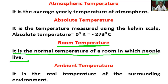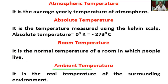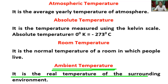Room temperature is a range of air temperature that most people prefer for indoor settings. What is ambient temperature? It is the real temperature of the surrounding environment. The real condition of the surrounding is called ambient temperature, which is the real air temperature of an atmosphere.